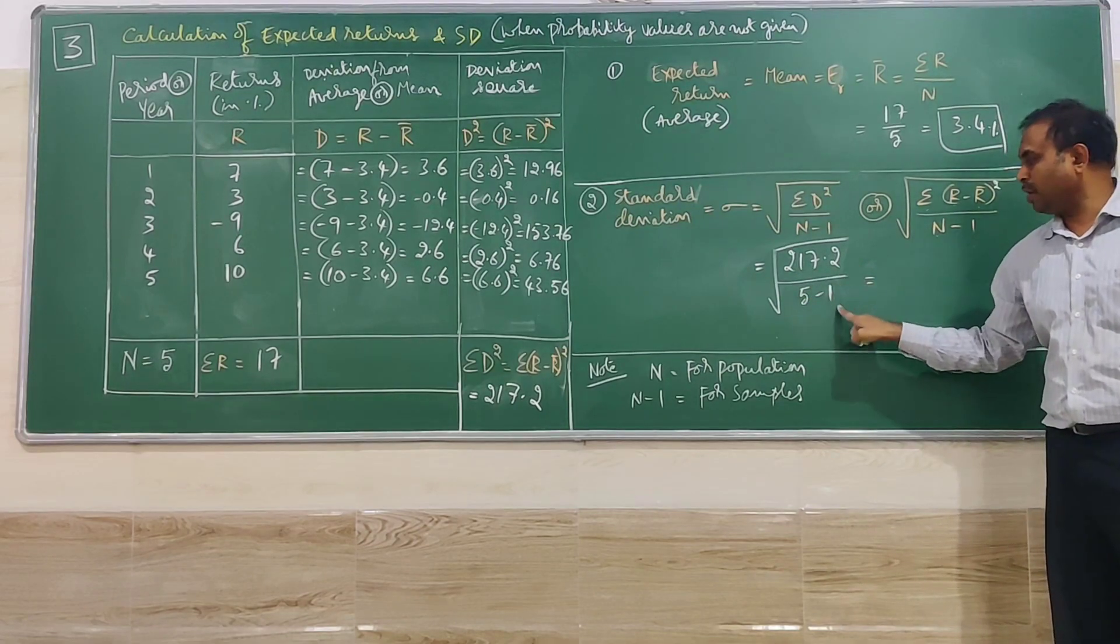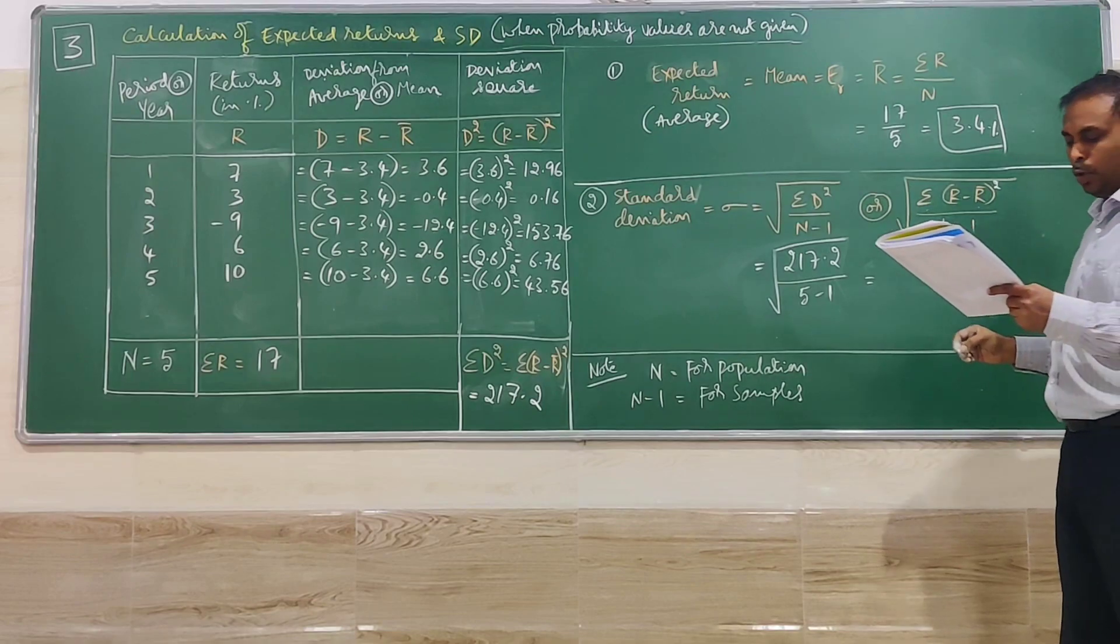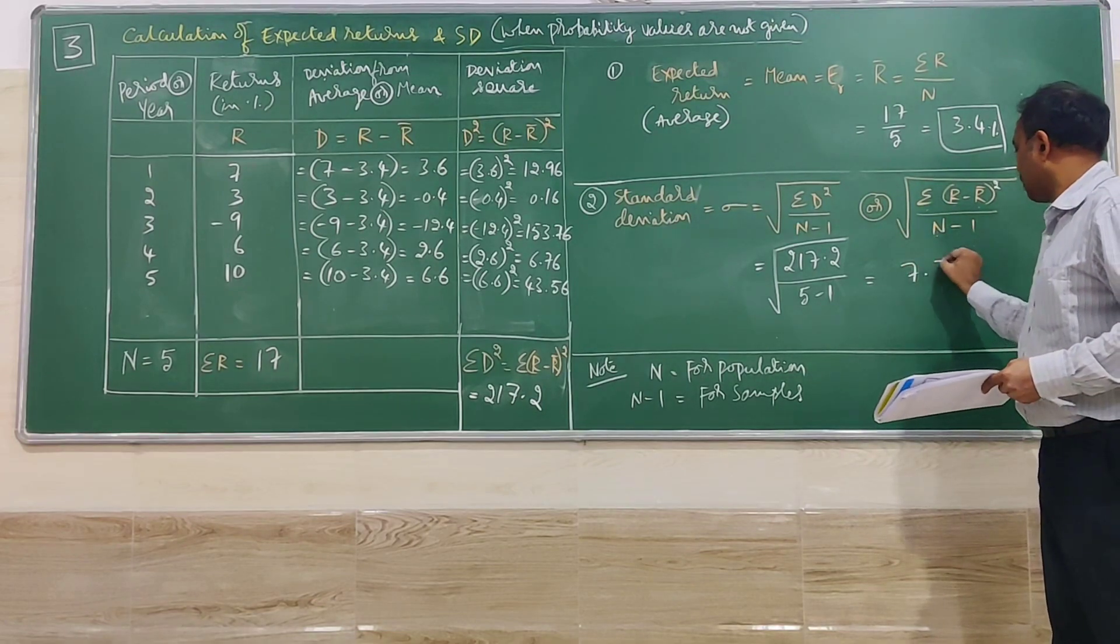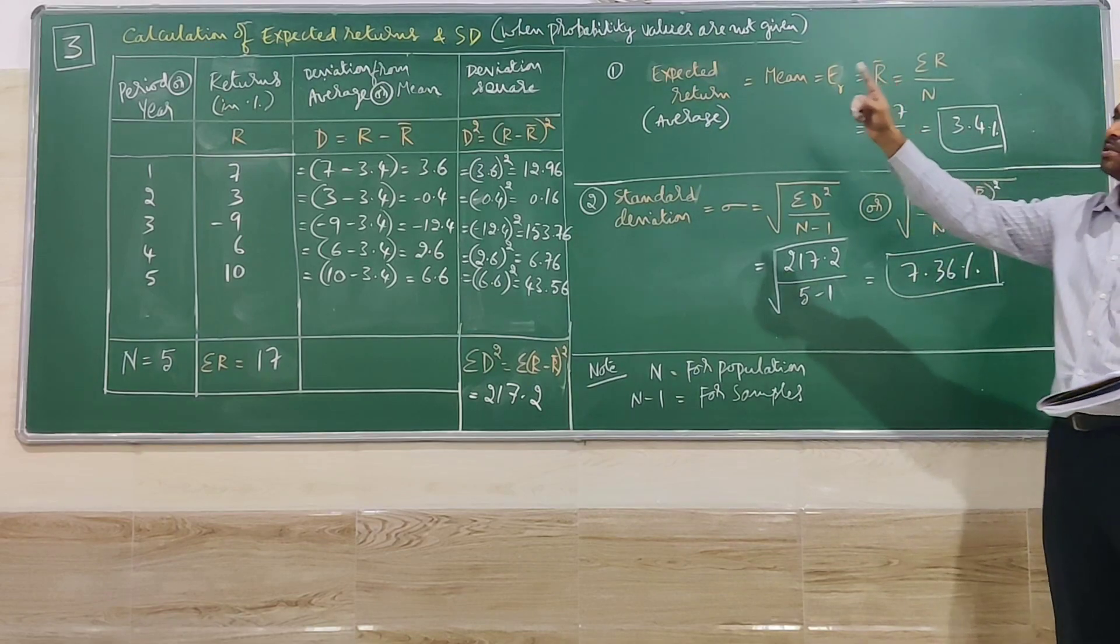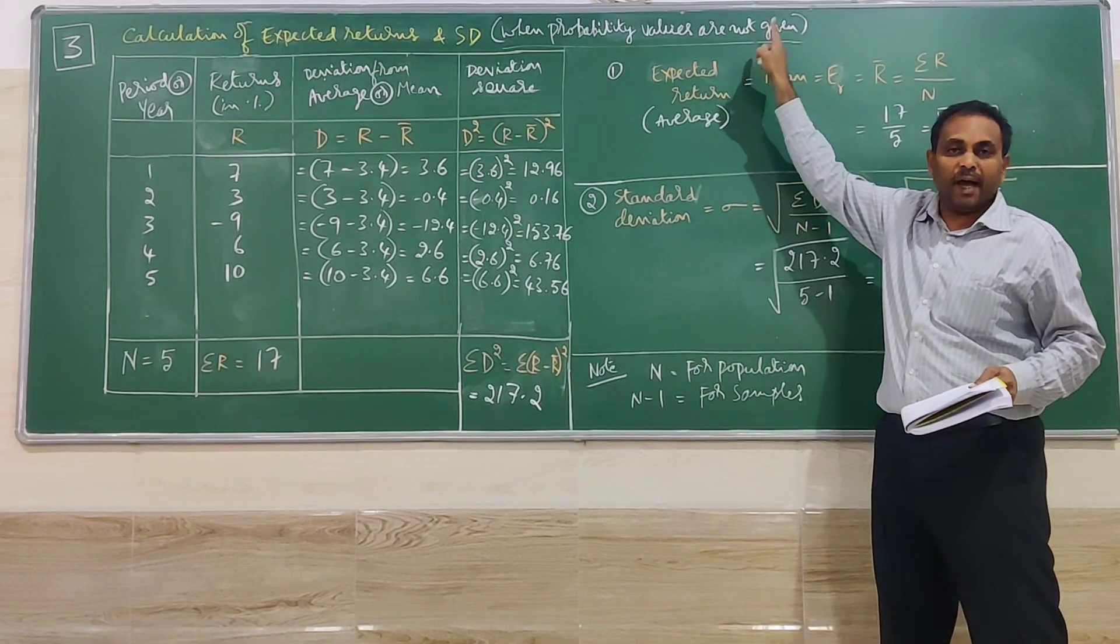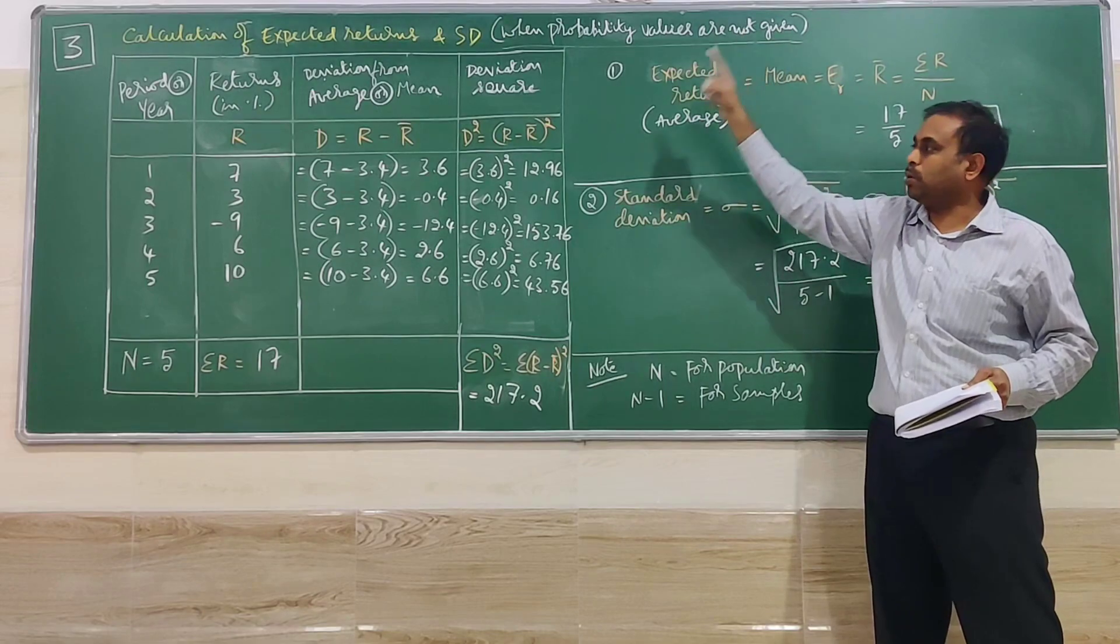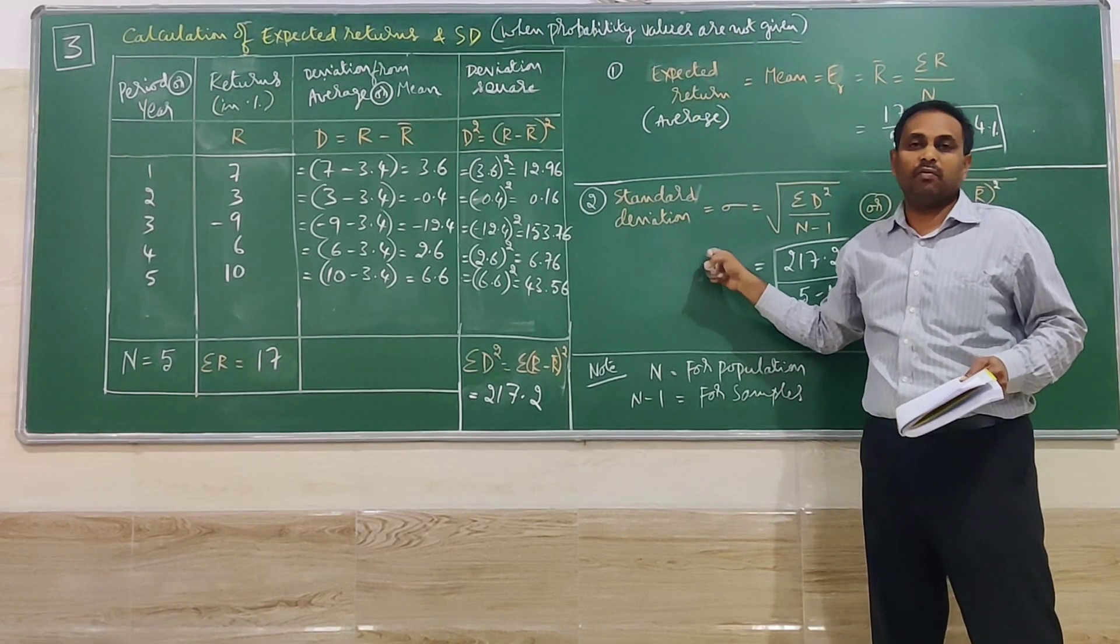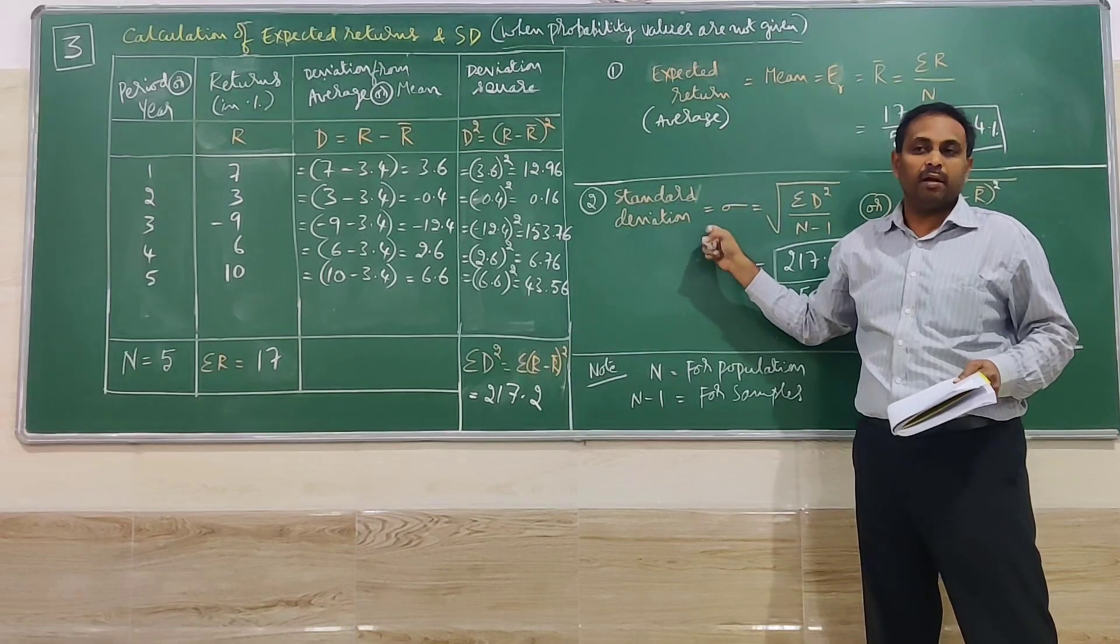217.2 divided by 4, then do the square root. You will get the value 7.36 percentage as the standard deviation. Again, in this problem, please observe probability values are not given. So without probability values also we can find the risk value. In this problem, the risk value is standard deviation.